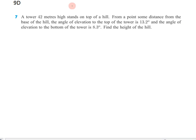In this question, we're told about a tower which is 42 meters high, and it stands on top of a hill. From a point that is some distance from the base of the hill, the angle of elevation to the top of the tower is 13.2 degrees. The angle of elevation to the bottom of the tower is 8.3 degrees, and we want to find the height of the hill.